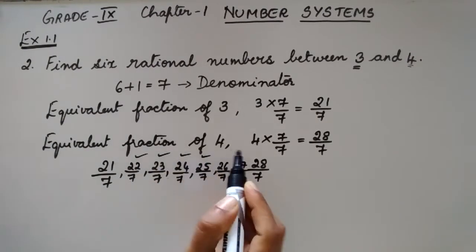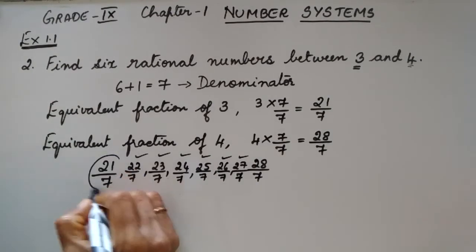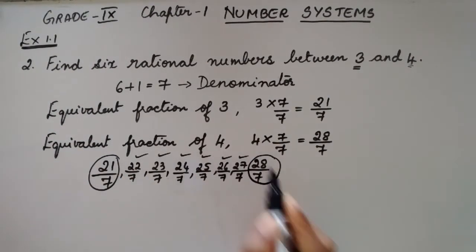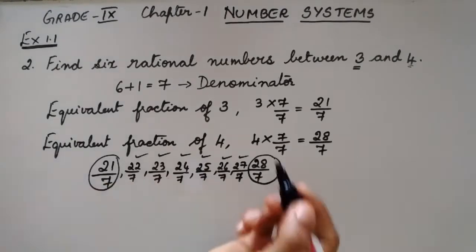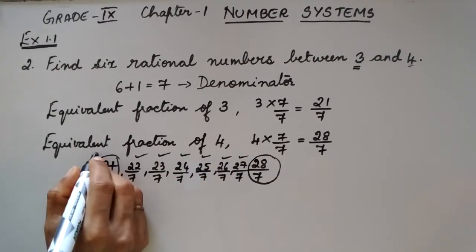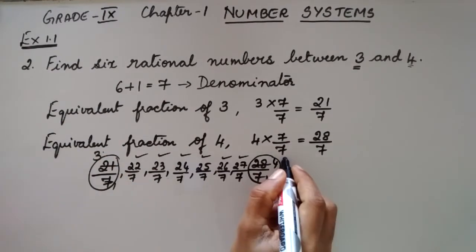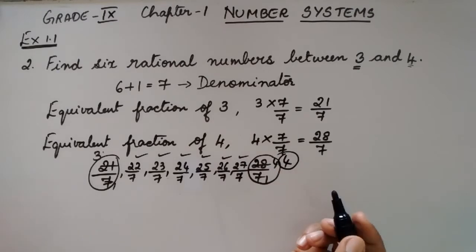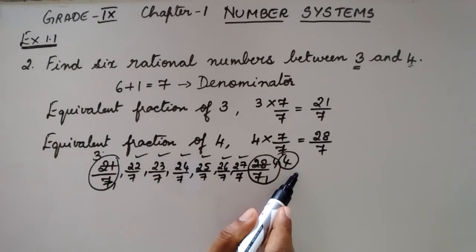I got 1, 2, 3, 4, 5, 6 rational numbers between 3 and 4. How much is this? This is 7 times 1 is 7, 3 times 7 is 21, so this is 3. This is 7 times 4 is 28, so this number is 4. These are the rational numbers between 3 and 4.